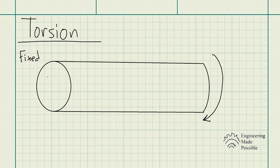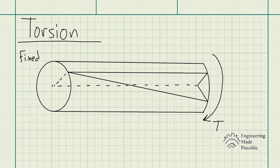Since it's fixed on one end, it will actually deform and look a little bit like this. At the fixed end the shaft stays fixed — there's no movement, no deformation. But the farther you get along the shaft toward where the torque is being applied, the more it deforms or twists the rod.